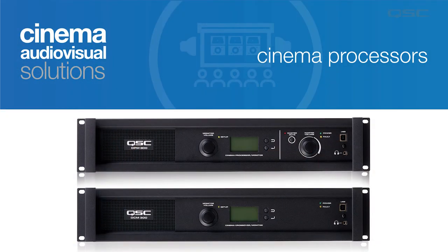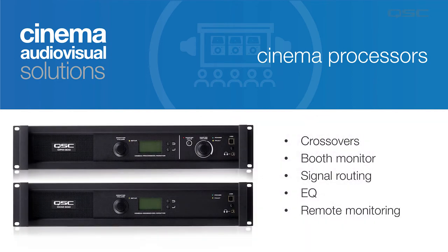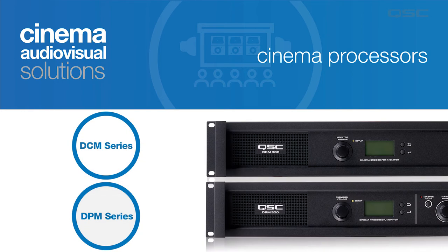Let's start off with our cinema processors. QSC was the first company to combine all the essential functions of cinema audio into a single device: crossovers, booth monitor, signal routing, EQ, and even remote status monitoring to satisfy the demand for remote network control. Our next generation lineup of processors currently includes two different series: the DCM series and the DPM series. We'll cover both of these here.